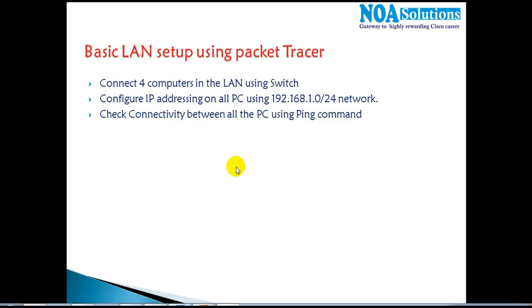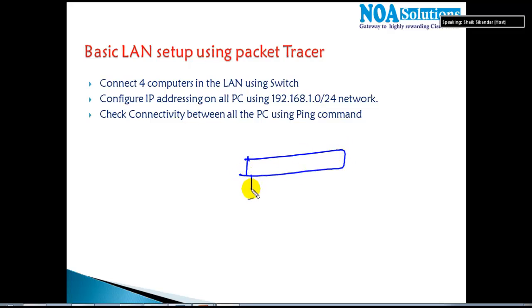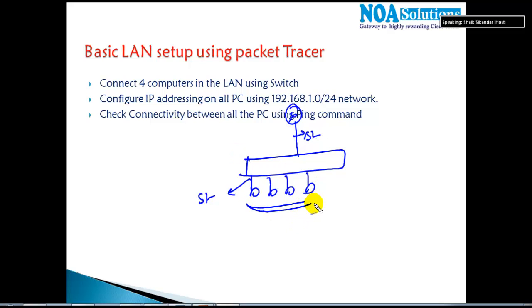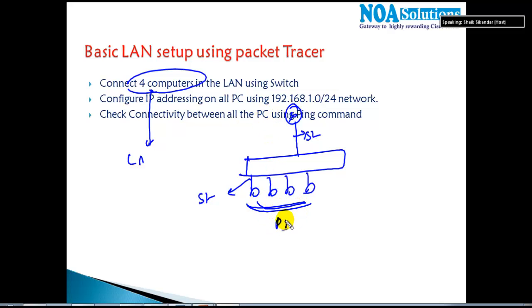In our previous sections we have seen how to provide connectivity in the LAN. If you have some computers connected in the LAN, we use a straight cable connecting from switch to PC and router to switch. Now I'm going to make one basic setup lab where I'm going to connect four computers in the LAN and make sure these four devices can communicate with each other.